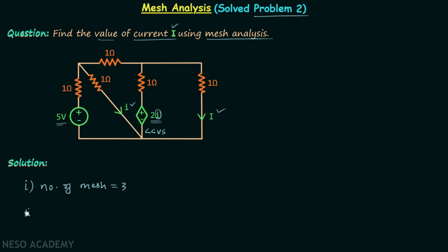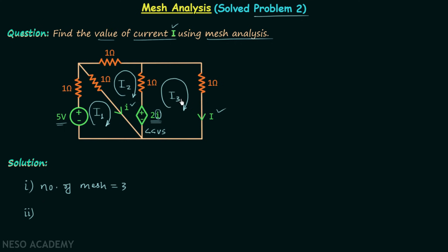In step number two we assign currents to all the meshes. We have three meshes, so we will assign three currents: i1 is the current flowing in mesh number one, i2 in mesh number two, and i3 in mesh number three. We will provide the clockwise direction to all three currents, as I have already explained why clockwise direction is preferred.